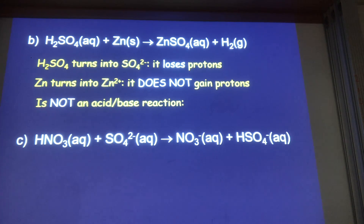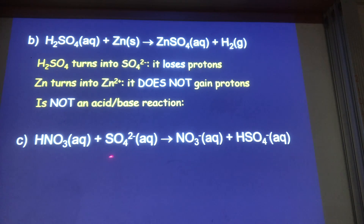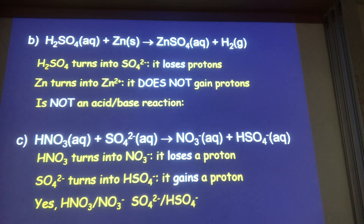Nitric acid reacts with sulfate to produce nitrate and hydrogen sulfate. Looking at the pairs: nitric acid and nitrate ion differ by a single H⁺ — acid and conjugate base. Sulfate turns into hydrogen sulfate — add an H⁺ to sulfate and the charge goes from 2⁻ to 1⁻. This is most definitely an acid-base reaction, and those are our conjugate acid-base pairs.